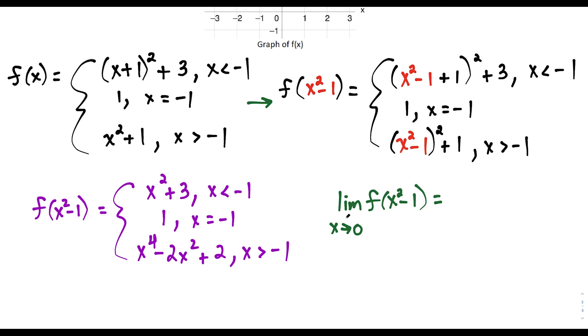So now when I want to find the limit as x approaches 0, notice that for x to approach 0, we would have to be on this last piece here, where x is greater than negative 1.